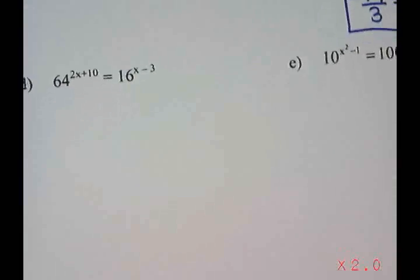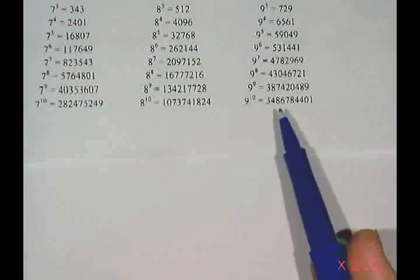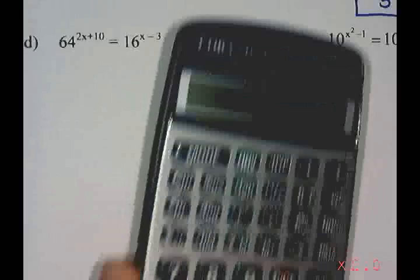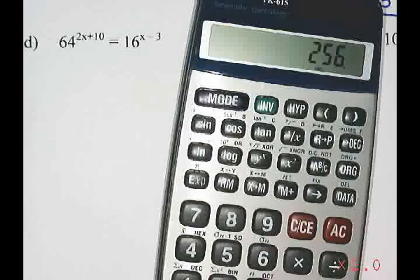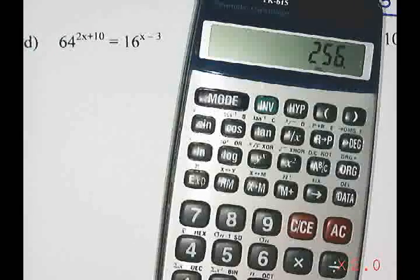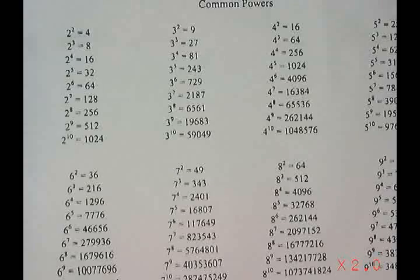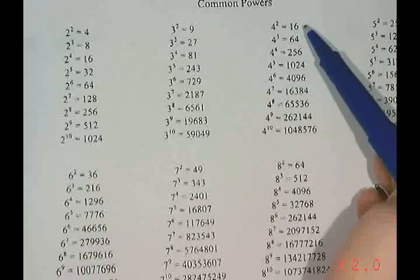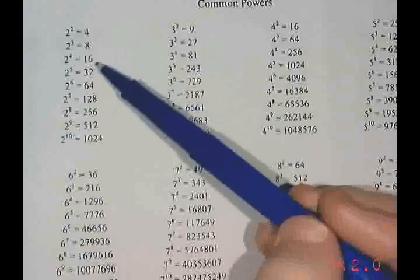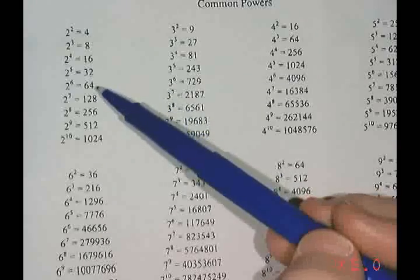The next example: 64 to the power of 2x plus 10 equals 16 to the power of x minus 3. My sheet doesn't go past a power of 9, so I'll check if 64 is a power of 16. 16 to the 1 is 16, and 16 squared is 256 — it skips over 64, so they're not both powers of 16. Instead, I look for a base that has both 16 and 64. I see that 4 squared is 16 and 4 to the power of 3 is 64, so I could write both as powers of 4 — or both as powers of 2. Either works; I'll choose 4.